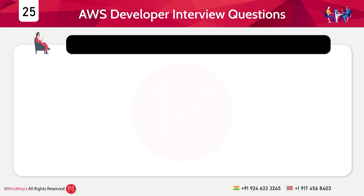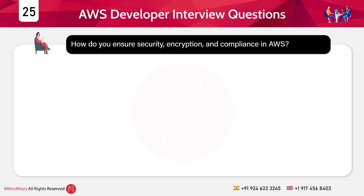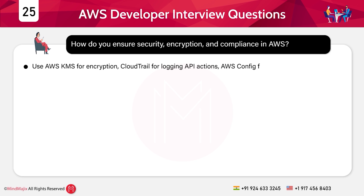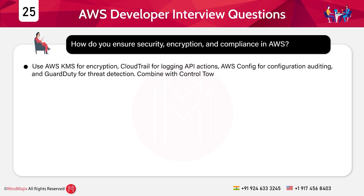Question 25: How do you ensure security, encryption, and compliance in AWS? Answer: Use AWS KMS for encryption, CloudTrail for logging API actions, AWS Config for configuration auditing, and GuardDuty for threat detection — combined with Control Tower for governance setup.